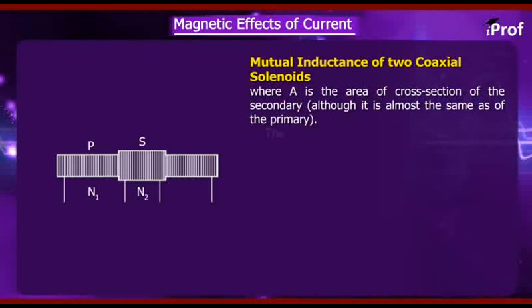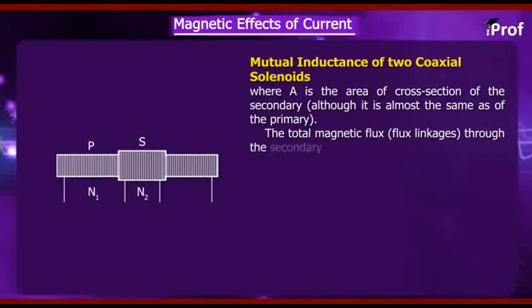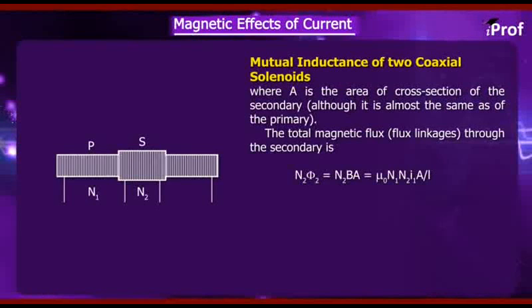The total magnetic flux linkage through the secondary is N2·φ₂ = N2·BA = μ₀ (N1 N2 I1 A) / L.